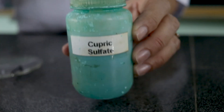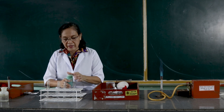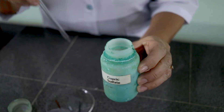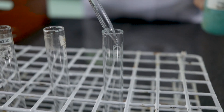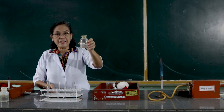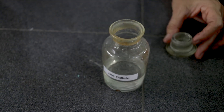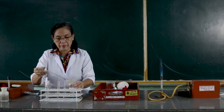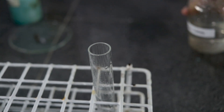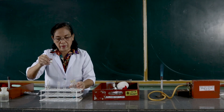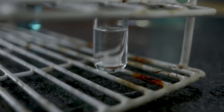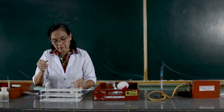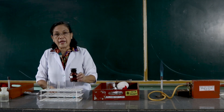This is the copper sulfate — let us get 5 ml of this. This is the zinc sulfate. And this is the silver nitrate.